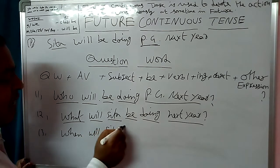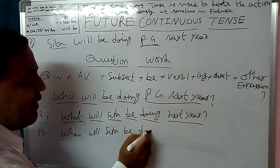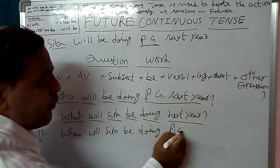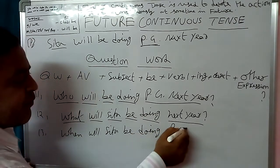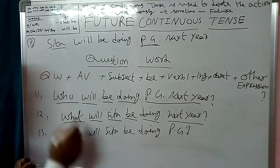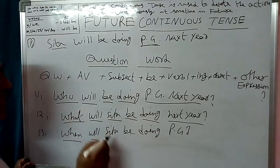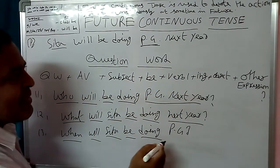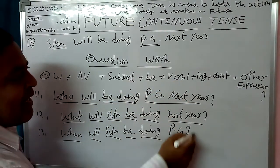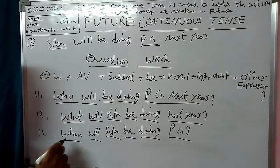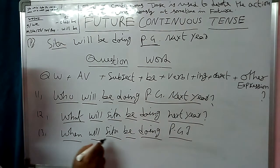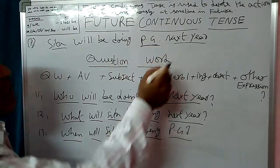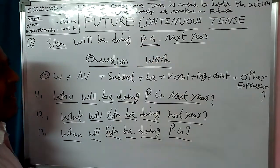When will Sita be doing PG? Structure: When (Question word) + Will + Sita (Subject) + Be + Doing (Verb 1 + -ing) + PG (Object). Answer: Next year. Sita will be doing PG next year.